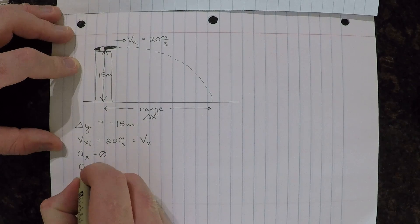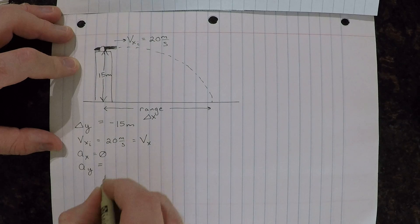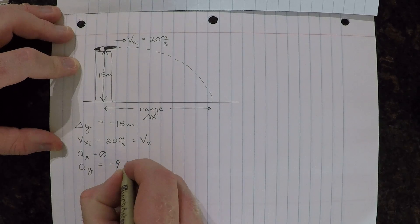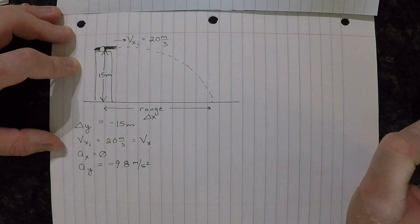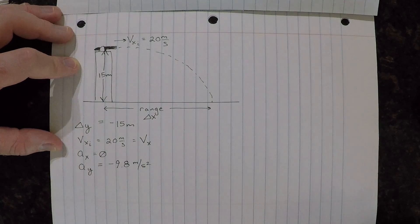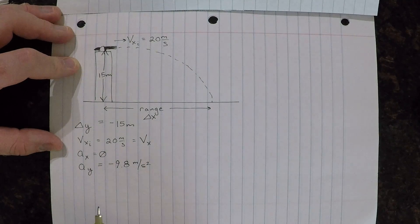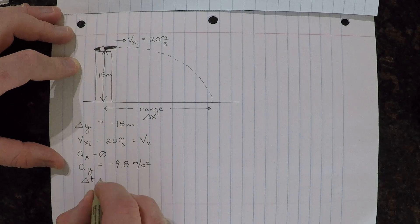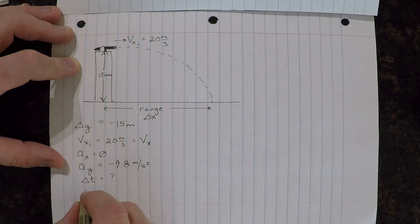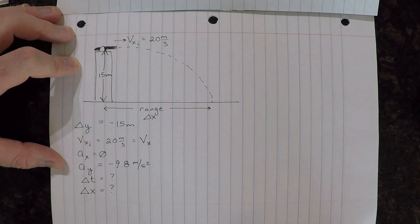We also know that the vertical acceleration is equal to negative 9.8 meters per second per second. That is the acceleration due to gravity, because we're calling downward to be negative, that's why we have the negative there. Now a couple things that we don't know. We don't know how long this takes, and we don't know what the horizontal range is, but we'll get those in just a moment.